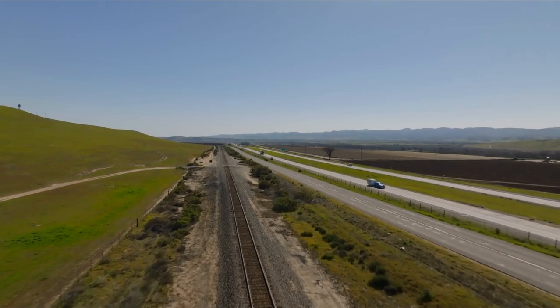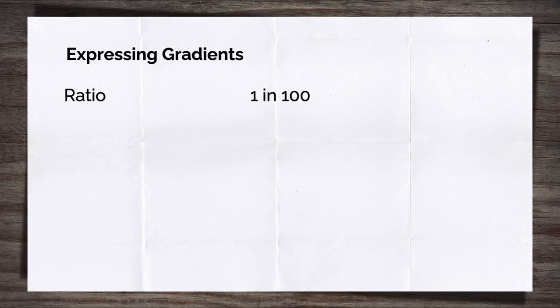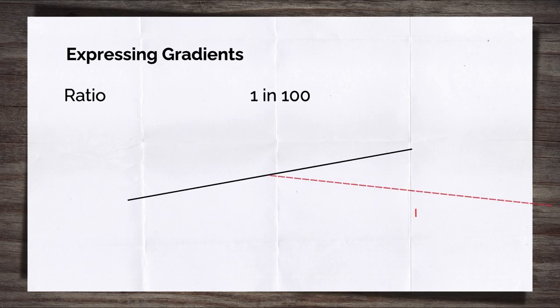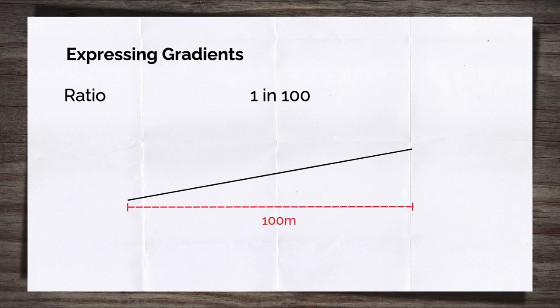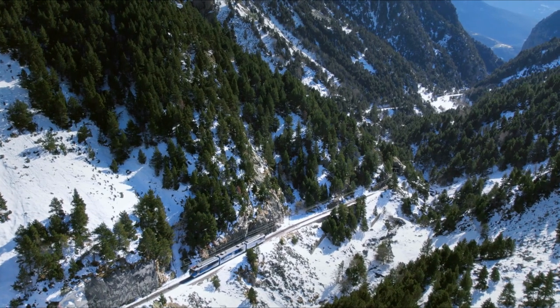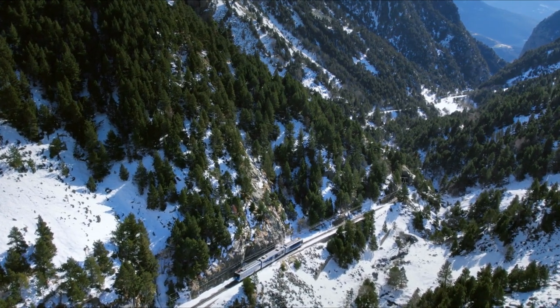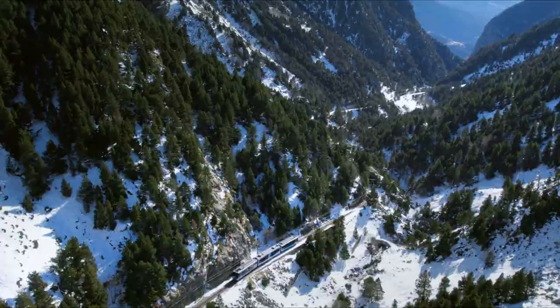You'll see gradients shown or expressed in one of two ways. The first method is using a ratio, such as 1 in 100 — this means for every 100 metres along the track, the elevation changes by 1 metre. The second way is a percentage, so for our example it would be 1%, as this is the change in height. Everyone has their preferred convention and it's likely you'll see both of them on a drawing or design.